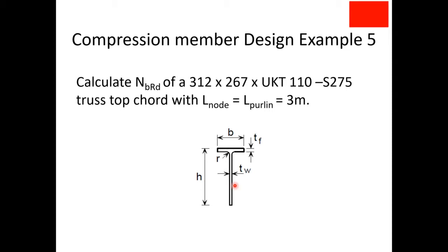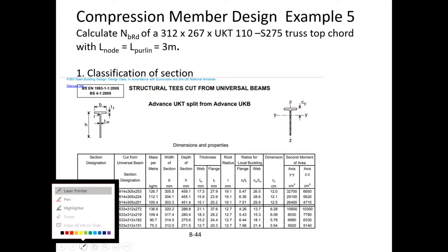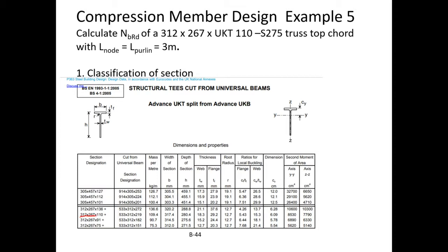The first step is section classification. We are designing to Eurocode 3, using the Blue Book and SCI publication P363 for section properties. The section is a 312×267×112 UKT, cut from a 533×312×219 universal beam section - essentially cut halfway down the web to give two T-sections from one UB. Key properties are noted: b = 317.4 mm, h = 280.4 mm.